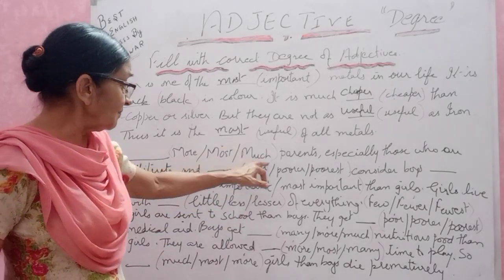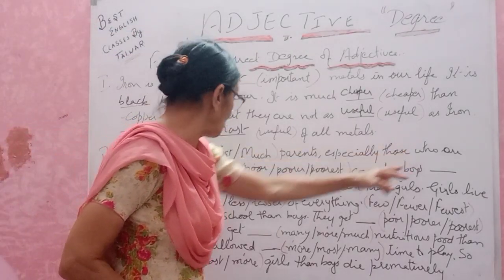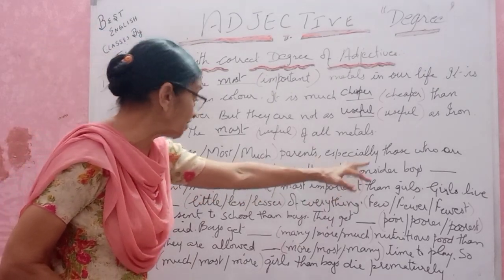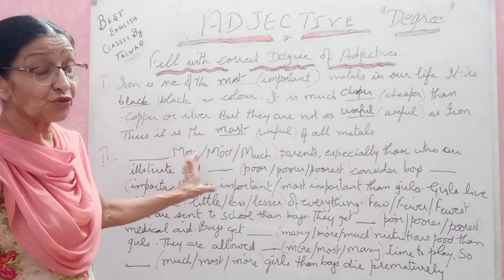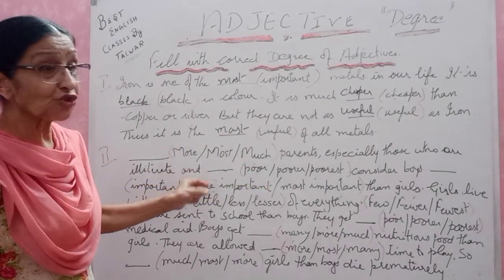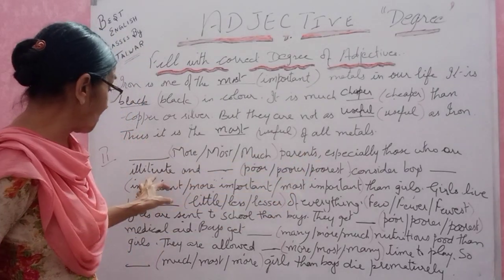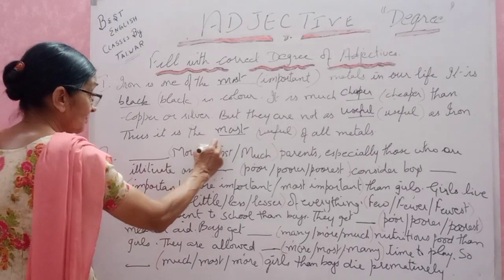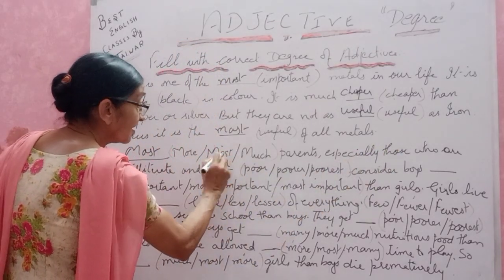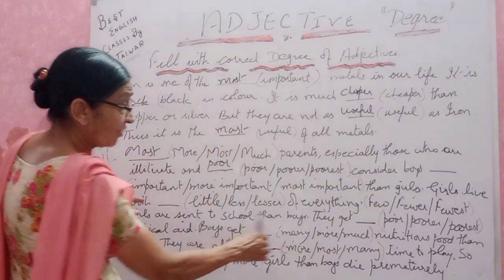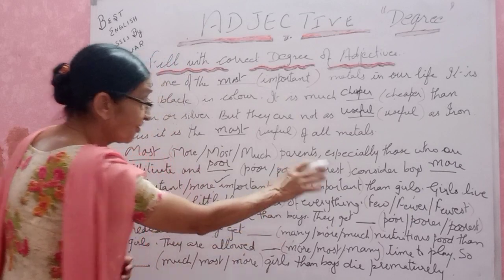Next one: three options are given — more, most, much. Parents, especially those who are illiterate and poor, consider boys more important than girls. The options are: important, more important, most important. Since we are comparing boys to girls using 'than', we use the comparative: 'more important than girls'.